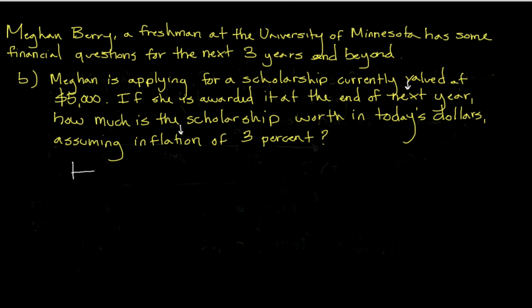Similar to the prior video, we're first going to start by graphically representing what we have going on here. I'm going to draw a similar timeline with present value here. In this case, we really don't know what the present value of the five thousand dollars is — that's what we have to solve. What we know is that in a year from now we're going to be getting five thousand dollars, but that five thousand dollars is going to be worth a little bit differently because it's next year's money.